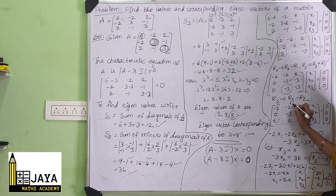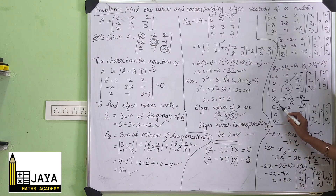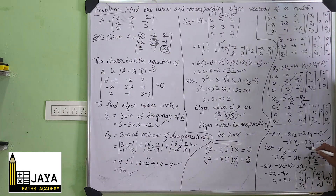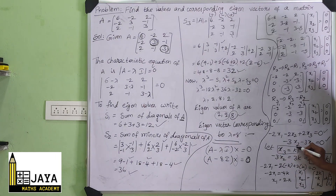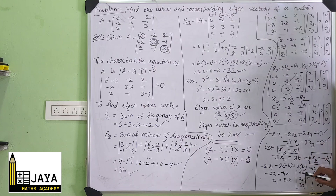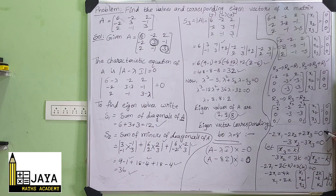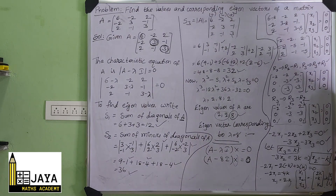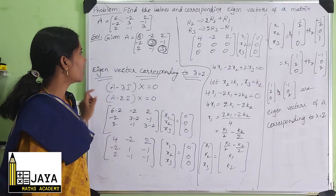Writing out the equations: -2X1 - 2X2 + 2X3 = 0 and -3X2 - 3X3 = 0. Let X3 = k. From the second equation: X2 = -k. Substituting into the first: -2X1 + 2k + 2k = 0, so X1 = 2k. Thus the eigenvector corresponding to λ = 8 is k·[2, -1, 1], i.e., [2, -1, 1].